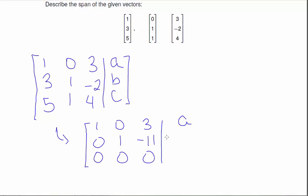And then my augmented column: a, -3a plus b, -2a minus b plus c.